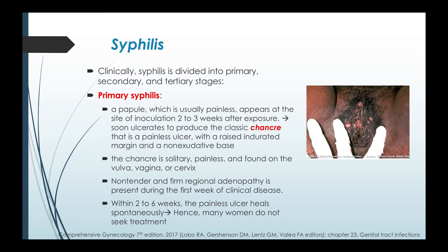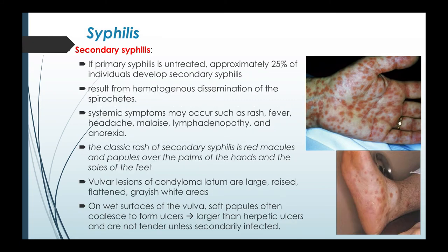Clinically, syphilis is divided into primary, secondary, and tertiary stages. For primary syphilis, a papule — usually painless — appears at the site of inoculation two to three weeks after exposure. This papule soon ulcerates to produce the classic chancre: a painless ulcer with a raised indurated margin and a non-exudative base. The chancre is solitary, painless, and found on the vulva, vagina, or cervix. Non-tender and firm regional adenopathy is present during the first week of clinical disease. Within two to six weeks the painless ulcer heals spontaneously, and hence many women with primary syphilis do not seek treatment.